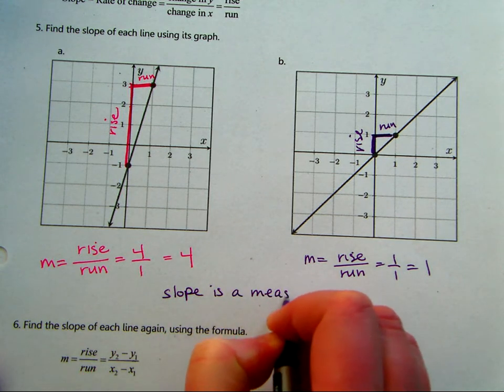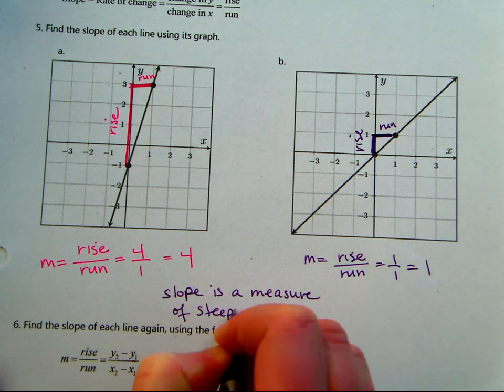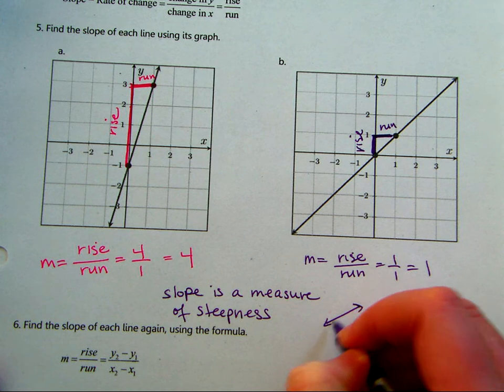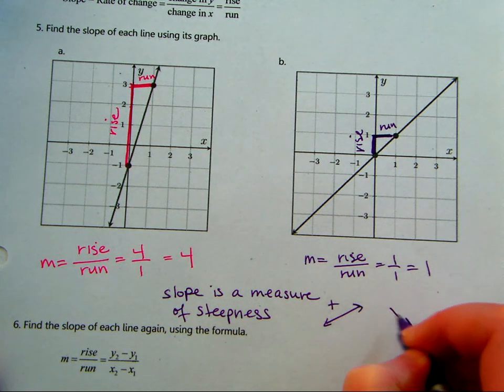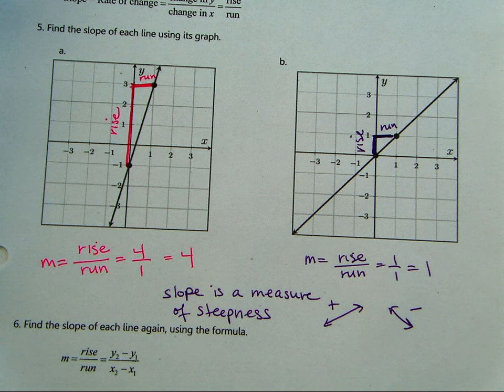Slope is a measure of steepness. If it's going up to the left, it's positive, or left to right going up. Left to right going down, then it will be a negative slope.